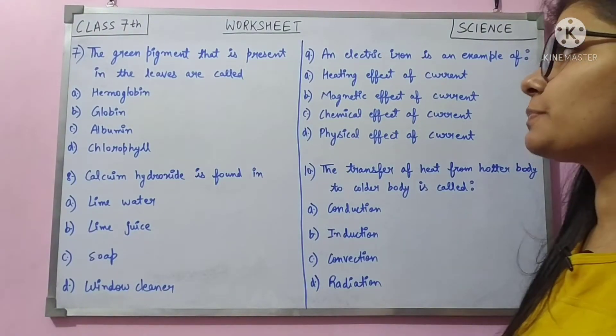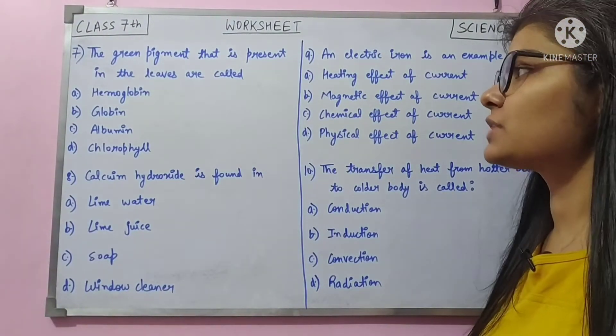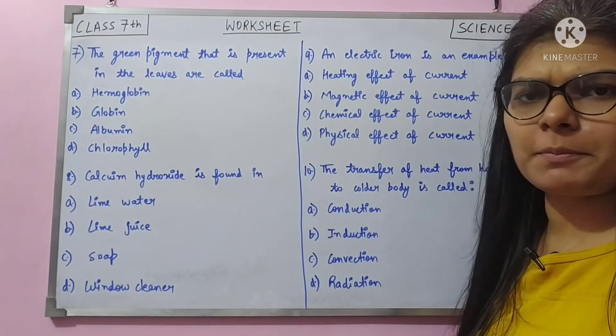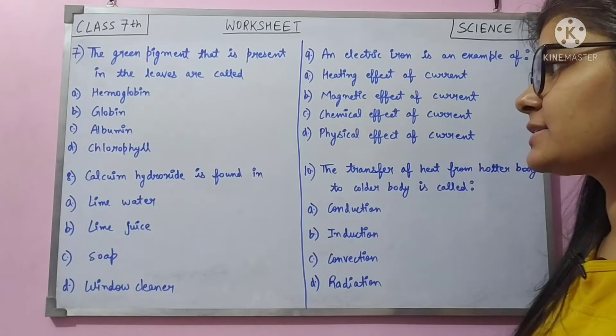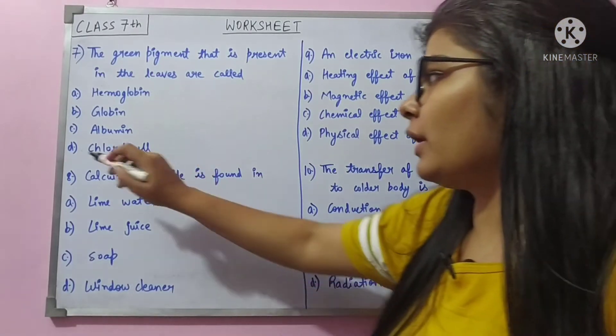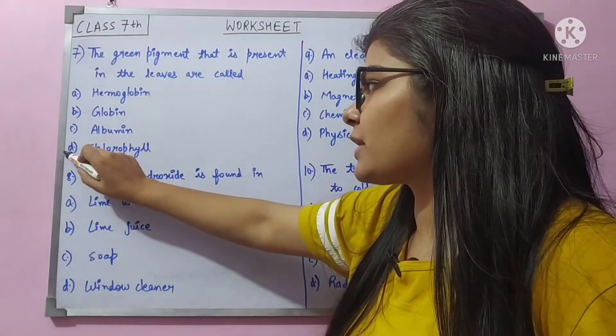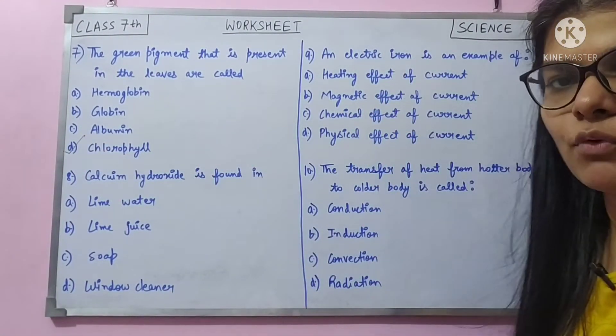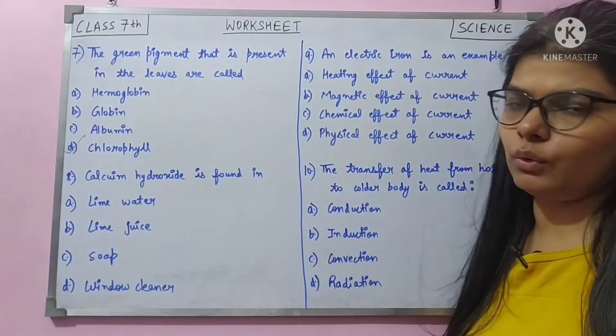Question number 7: the green pigment present in the leaves is called — this is a direct question. The green pigment in plants, due to which photosynthesis occurs, is chlorophyll.